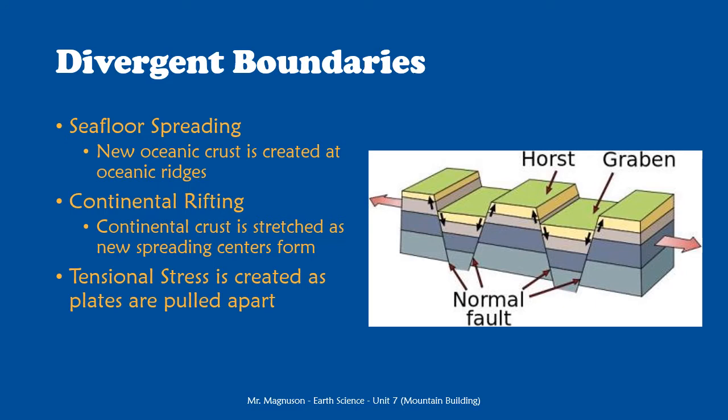In both of these cases, we have tensional stress pulling plates apart. The type of mountains associated with tensional stress — that pulling or stretching stress — is fault-block mountains. We have the horsts and the grabens, with normal faults, and some blocks moving up and some blocks moving down. We're going to see a lot of these under the seafloor at oceanic ridges and also where we see continental rifting and spreading of the crust.